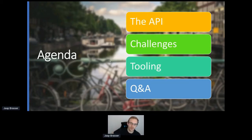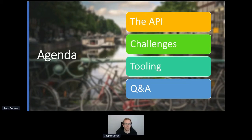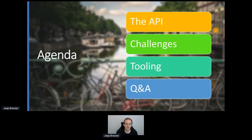So on our agenda for today, what we'll first do is get into our API to give a bit of a backstory of where we come from, because I work for Rubrik, which is a data management company — slightly different from banking APIs. Then I'll talk about some of the challenges we're running into when developing our API ecosystem. And then we'll get into the tooling. At the end, when Helen returns, we'll have time for Q&A, so feel free to leave any questions in the chat.